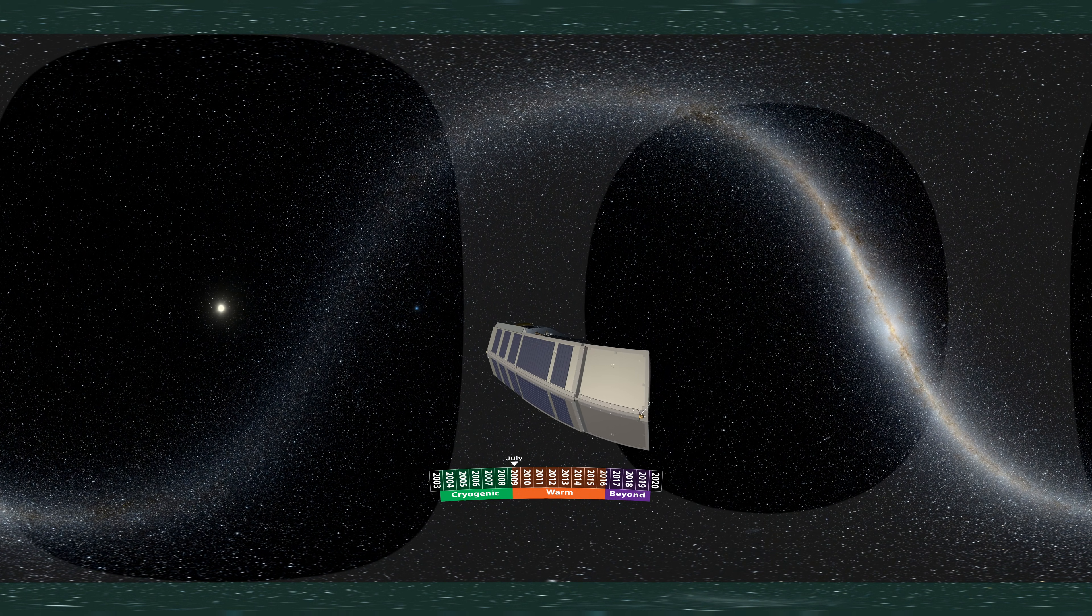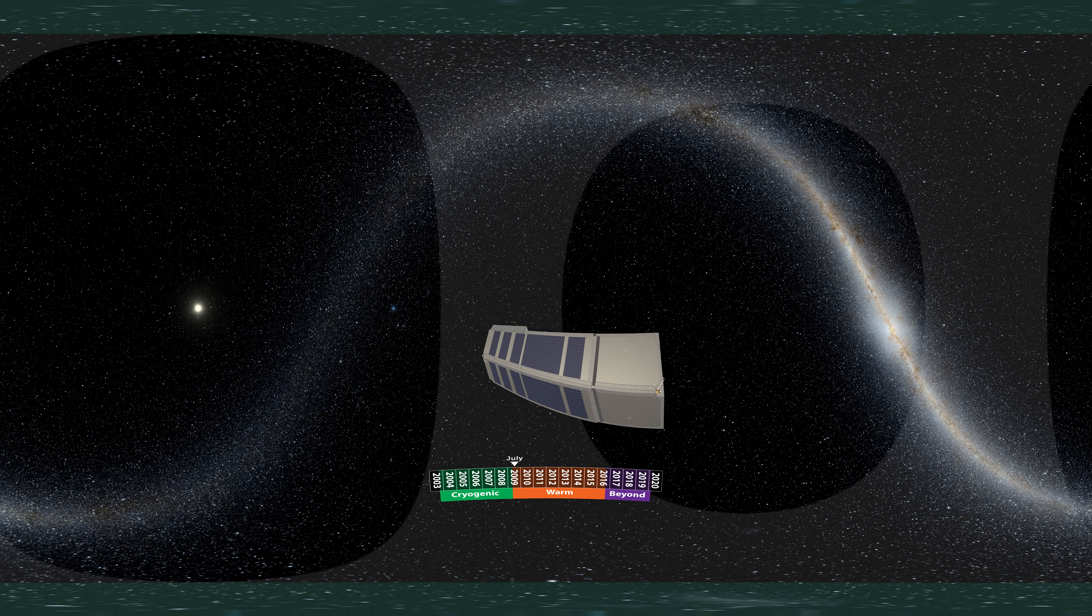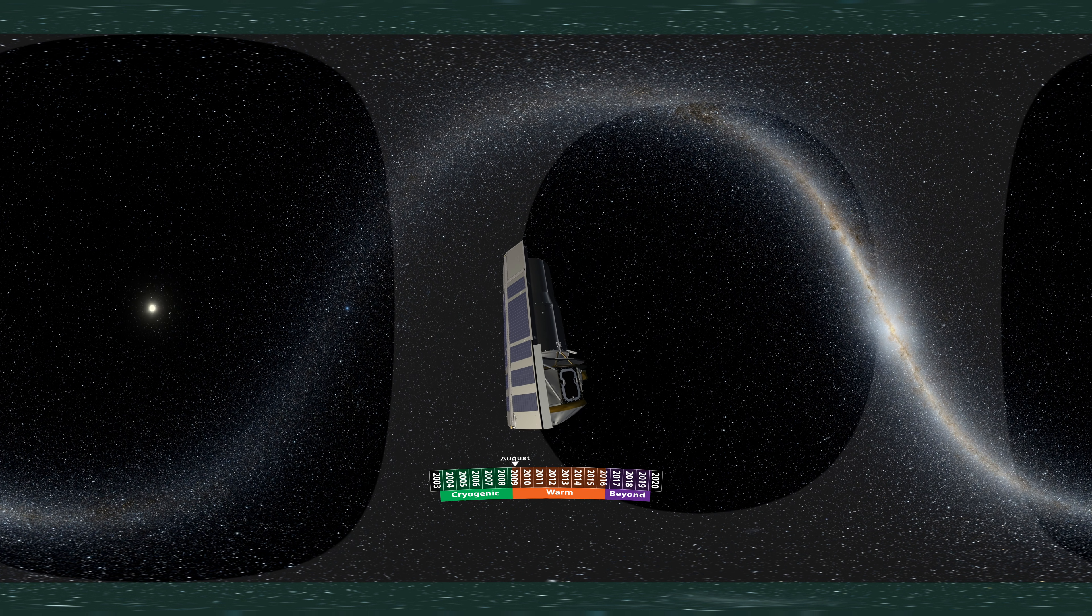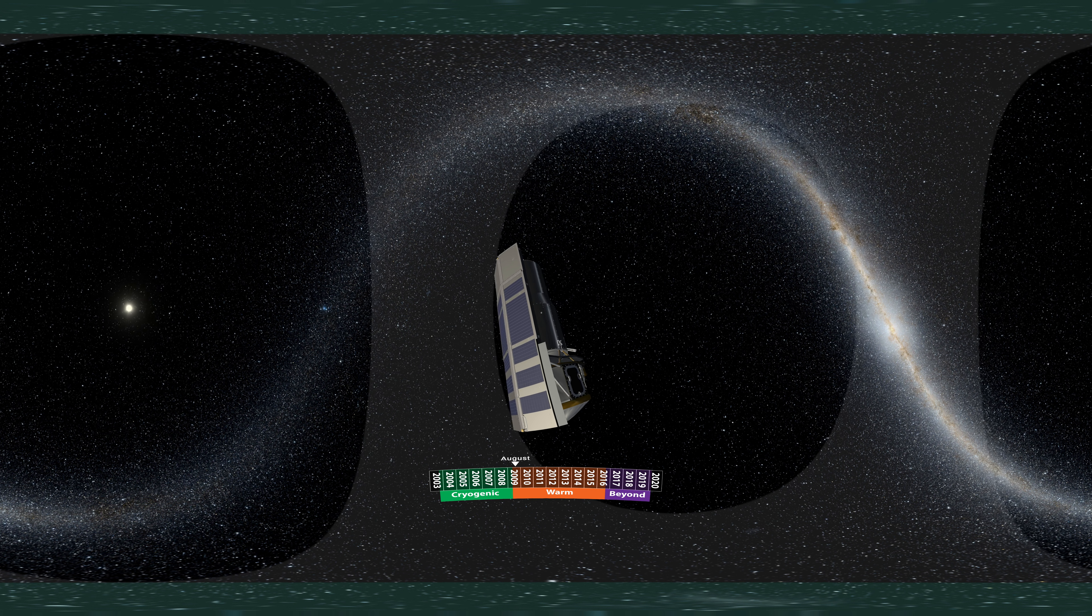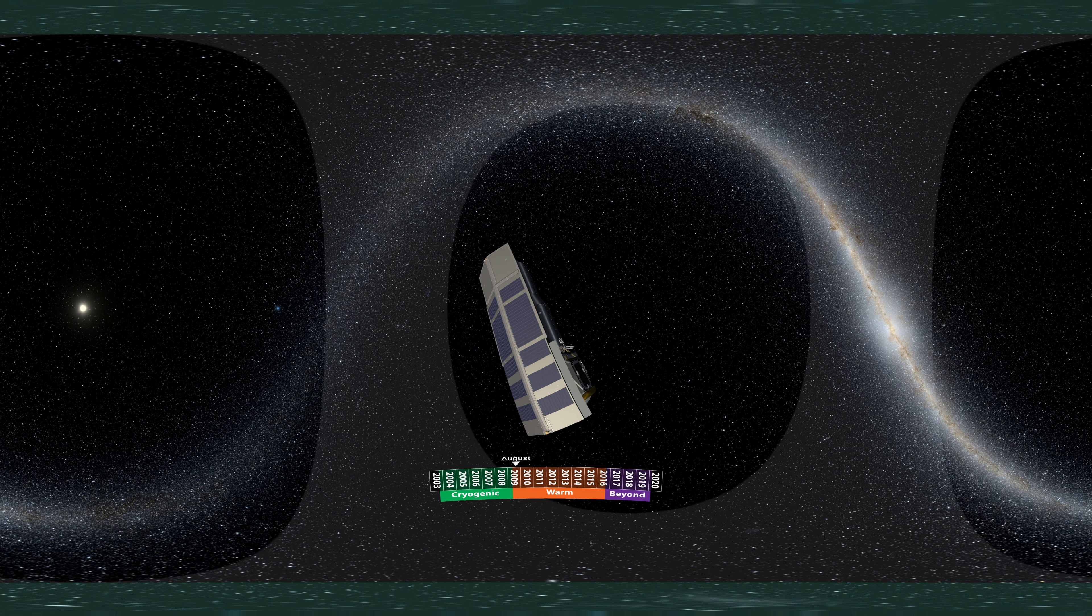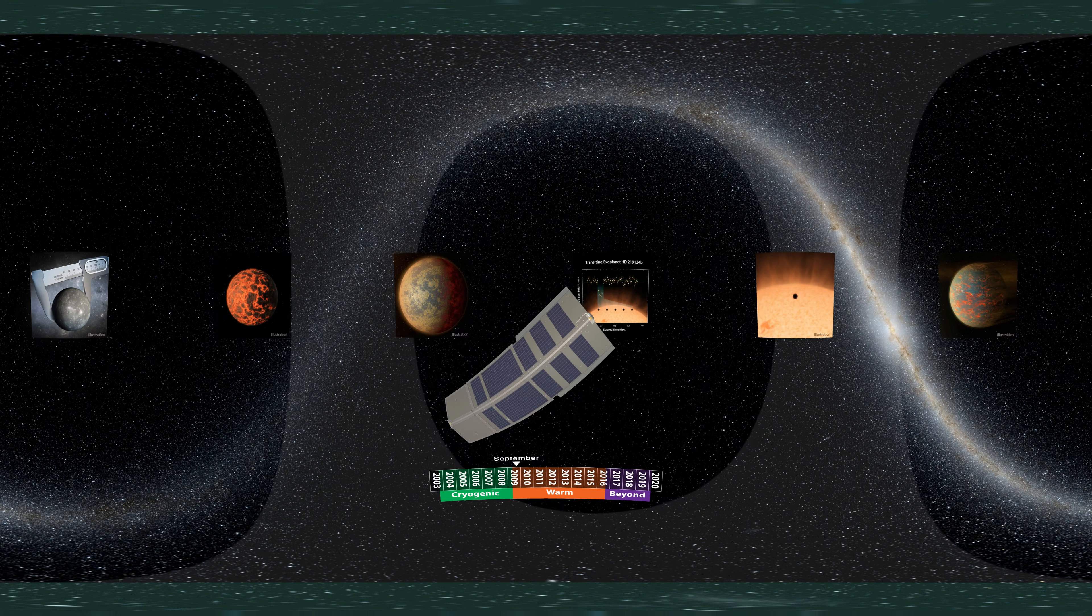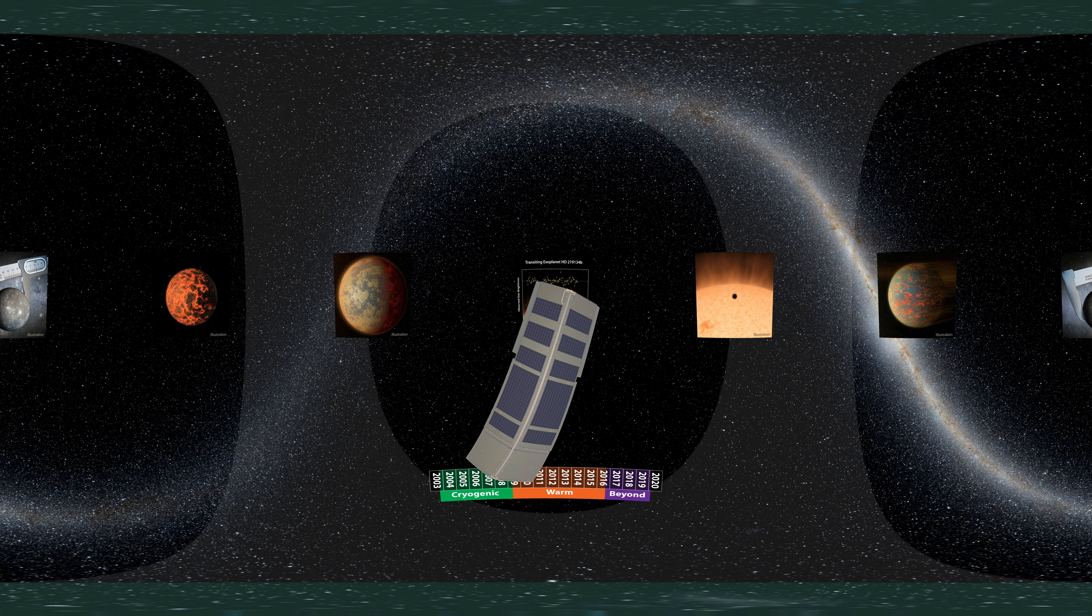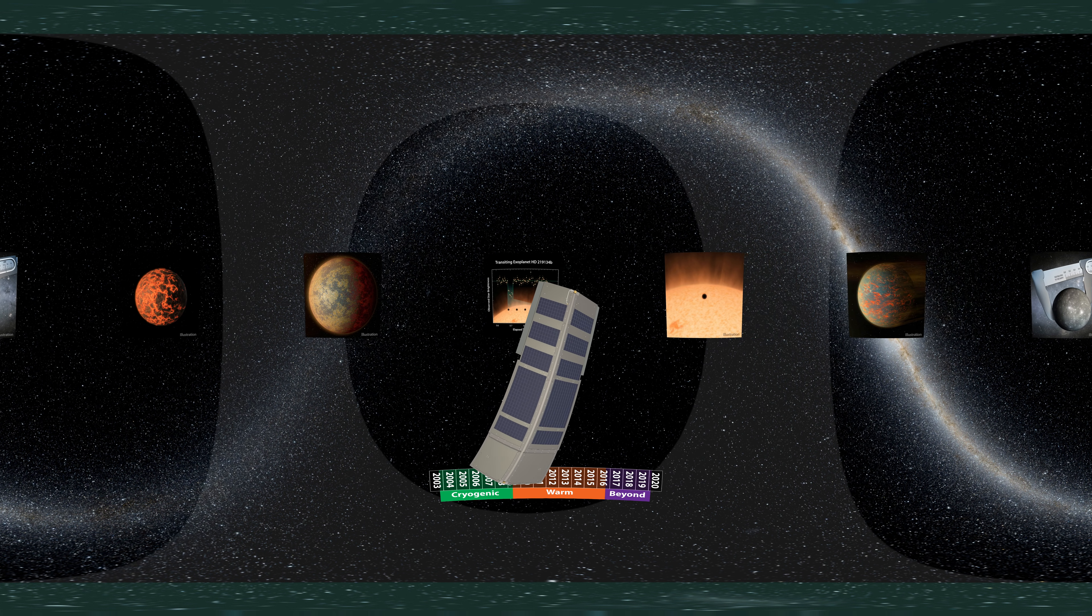While Spitzer could no longer see dust glowing at the longest wavelengths of infrared light, its studies of the universe continued in earnest. More remarkably, updated system software and procedures greatly improved Spitzer's precision, making it an even more powerful tool for studying exoplanets of all types, including smaller, rocky worlds.